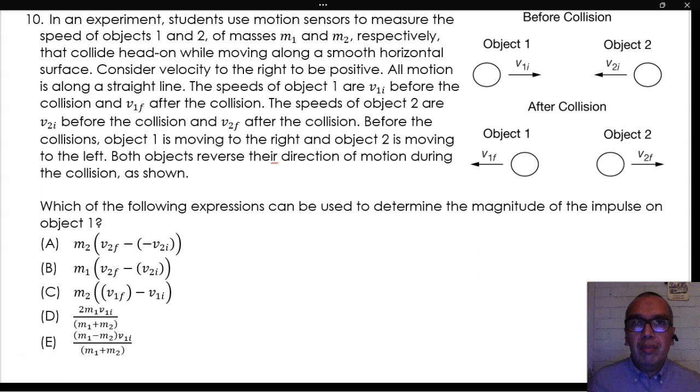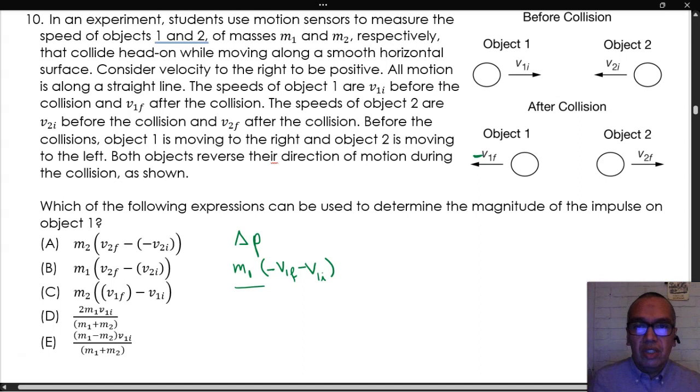The magnitude of the impulse can be given by the change in momentum. In the case of block 1, that would be m1 times negative v1f minus v1i. Notice the need to include a negative sign because the algebraic values indicated are speeds. They are all positive. We must include the sign to take the direction into consideration. Now, no option gives us this possibility.